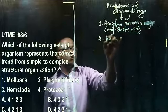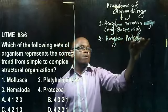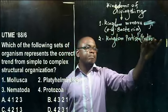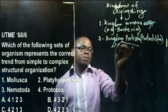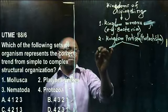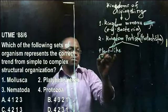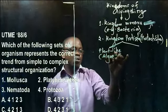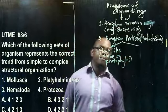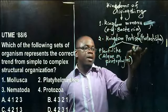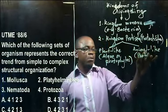We have the second kingdom, Kingdom Protista, which could also be called Protoktista. This kingdom has two groups: the plant-like protists, majorly the algae, which we could also call the protophytes; and the animal-like protists called the protozoans.